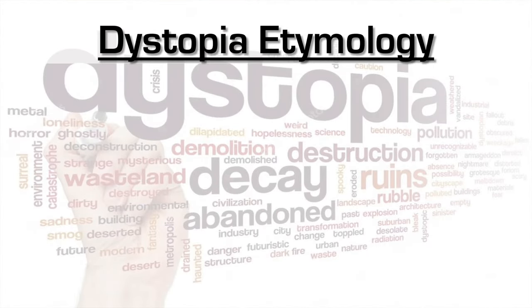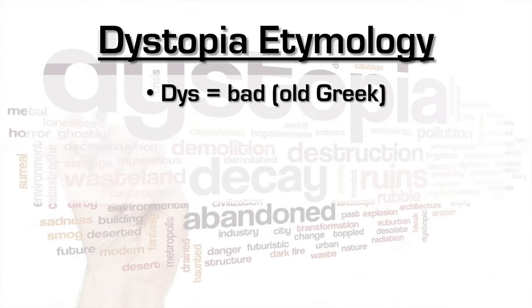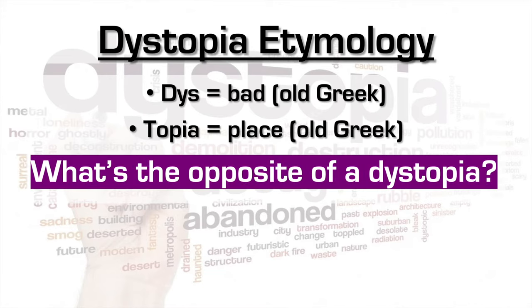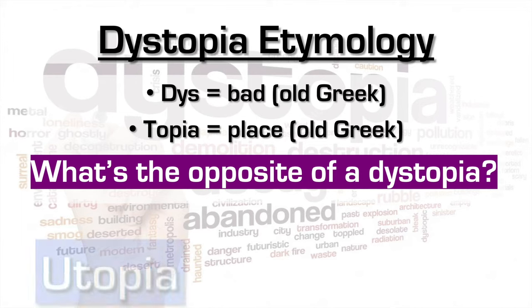Let's take a look at dystopia etymology. This comes from Old Greek and 'dys' means bad. 'Topia' means place in Old Greek. So, what is the opposite of a dystopia? Well, your answer will be utopia.